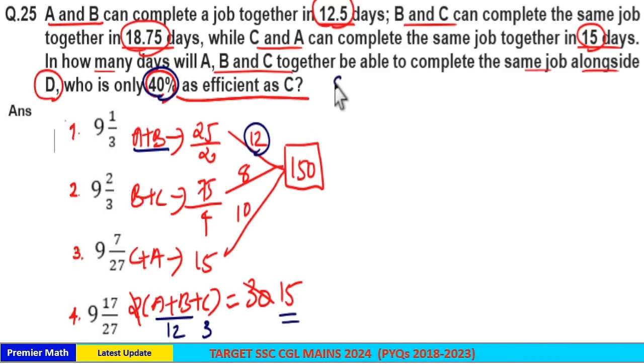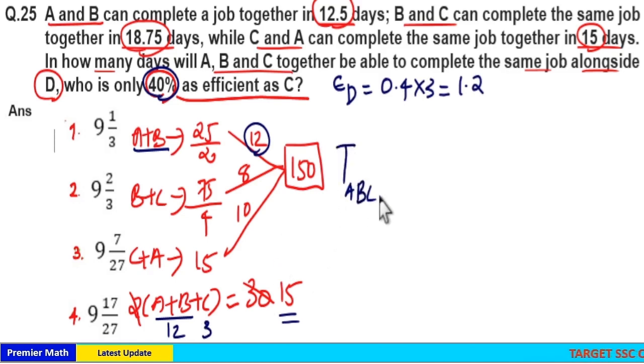Now efficiency of D is 40 percentage of C. 40 percentage is 0.4, so 0.4 times C is equal to—C is 3 units—so 0.4 into 3 is 1.2 unit is the efficiency of D.